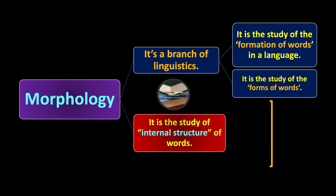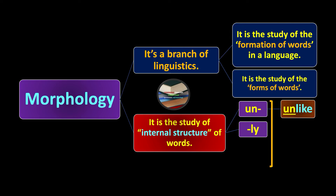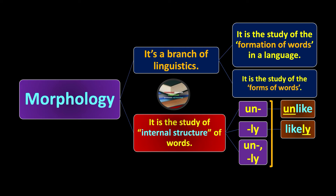For example, we have the prefix 'un-', and if we put this prefix before the root word 'like', it becomes 'unlike'. Likewise, we have the suffix '-ly', and if we put this suffix after 'like', it becomes 'likely'. We can also combine both affixes — the prefix 'un-' and the suffix '-ly' — before and after the root word 'like', making it 'unlikely'. The forms of words change when we add something before or after, and sometimes in between — for example, changing the present form of a verb into past.